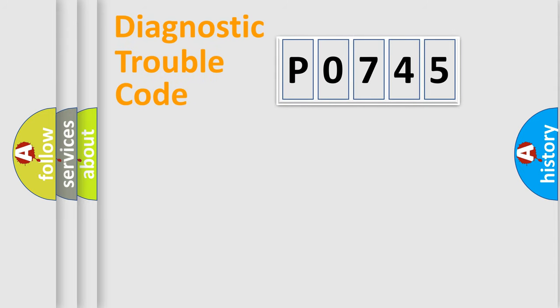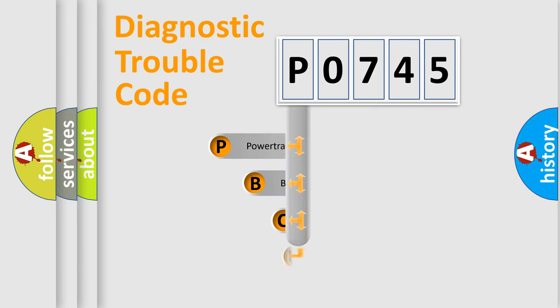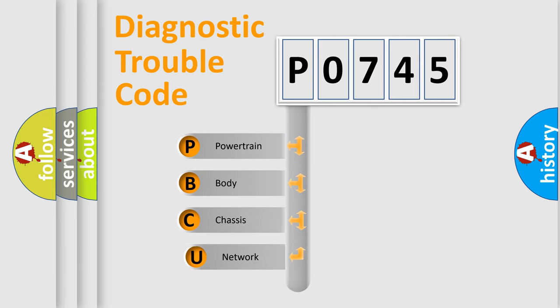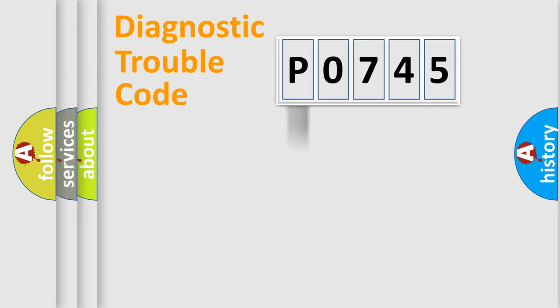Let's look at the history of diagnostic fault code composition according to the OBD2 protocol, which is unified for all automakers since 2000. We divide the electrical system of the automobile into four basic units: Powertrain, Body, Chassis, and Network.